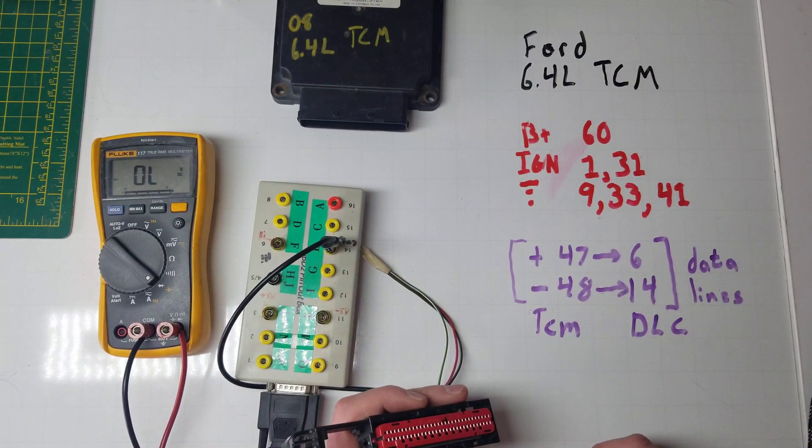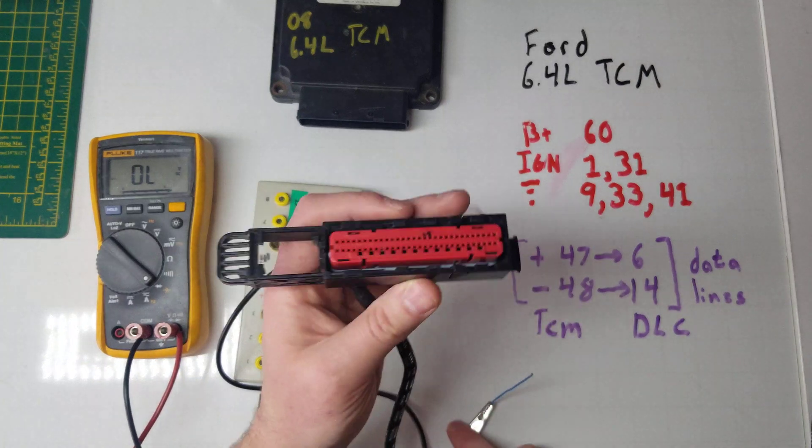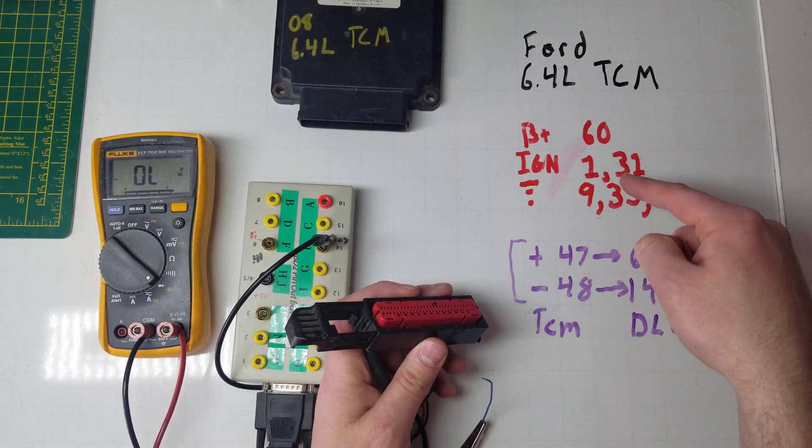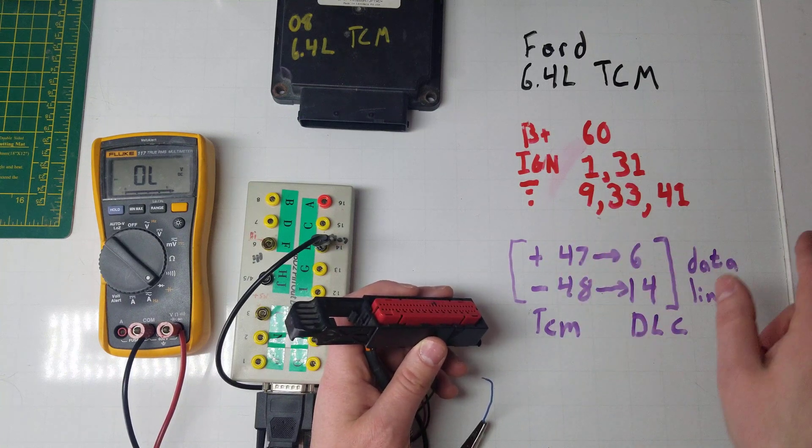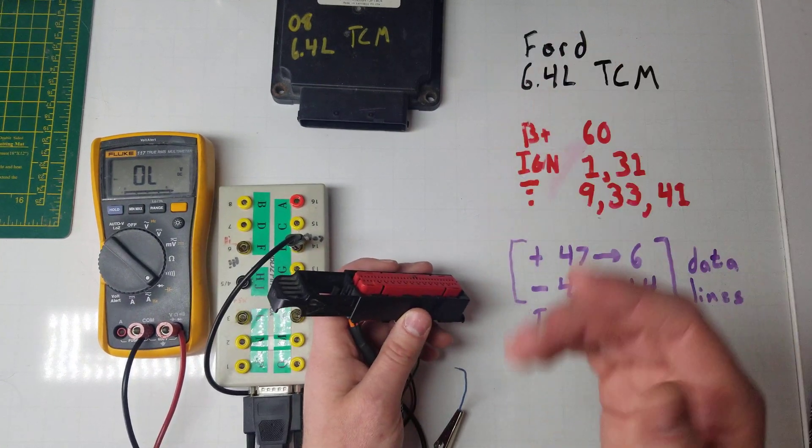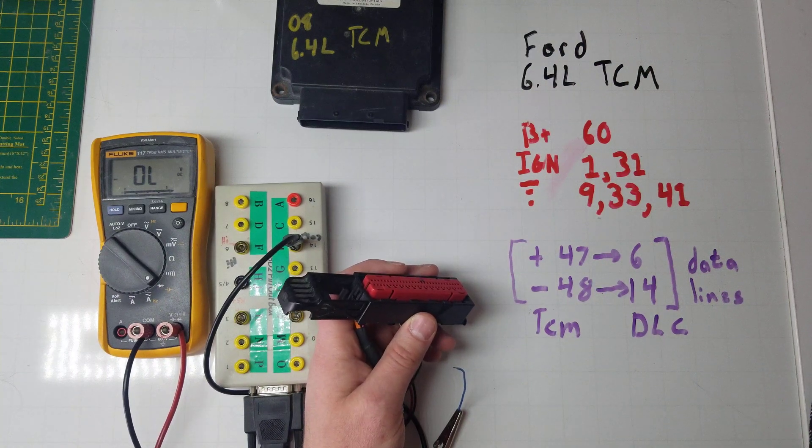Between the data link connector and the transmission control module connector, those three wires have battery voltage with the ignition turned on, and make sure your grounds are good. If all of those check out, your TCM is probably toast. Good luck.